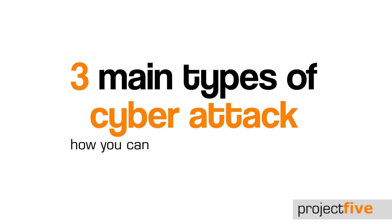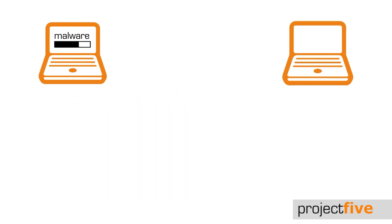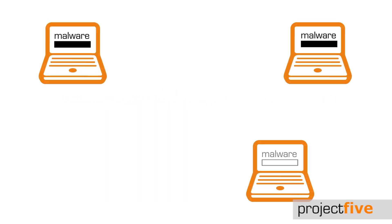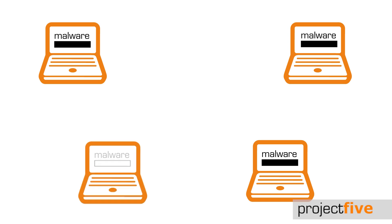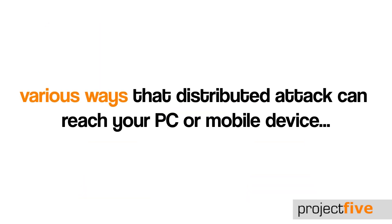So let's take a look at the three main types of cyber attack and most importantly how you can do your best to avoid them. Number one: distributed attack. This is where malware is installed on multiple computers. There are various ways that a distributed attack can reach your PC or mobile device.